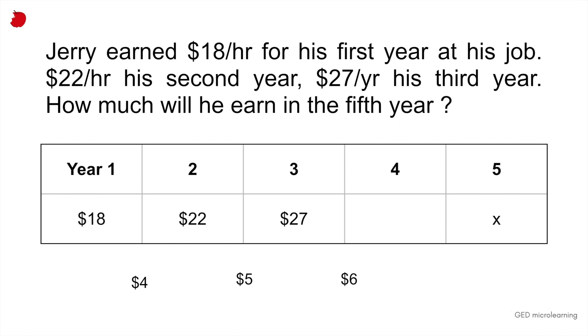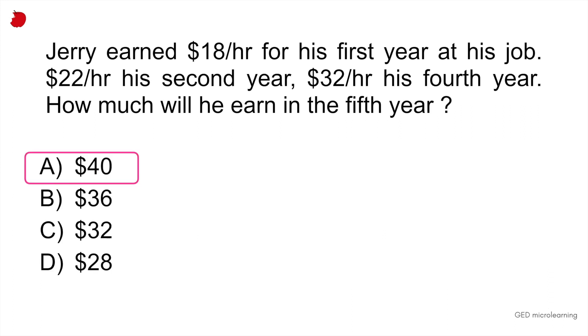So it looks like the pattern is going to be that he's earning one lonely dollar per hour more every year. So the sequence would be next $6. So we would expect him to earn $33 in the fourth year and then $7 more for the fifth year. So as we said, year four would be $33. And then for year five, we would add those $7, which would give us $40. Answer A.